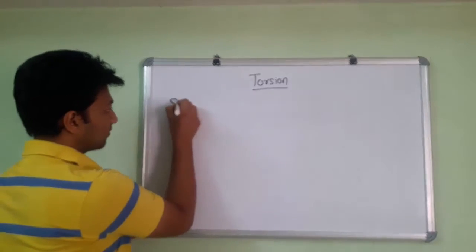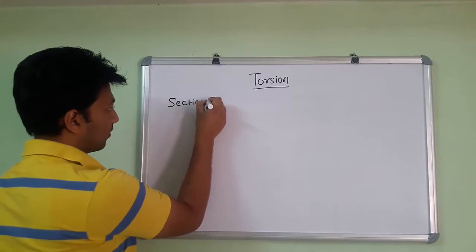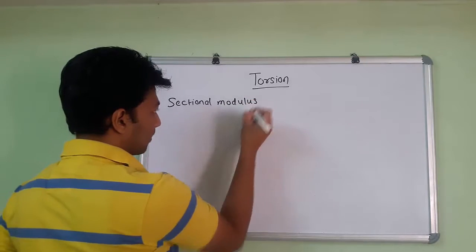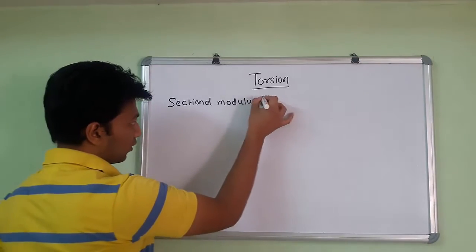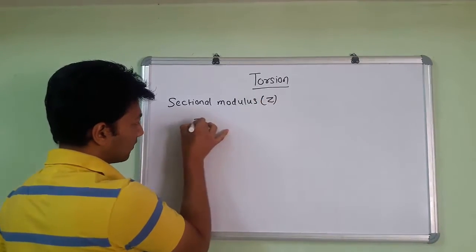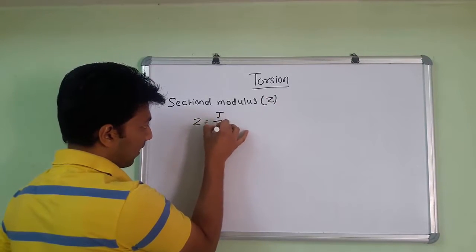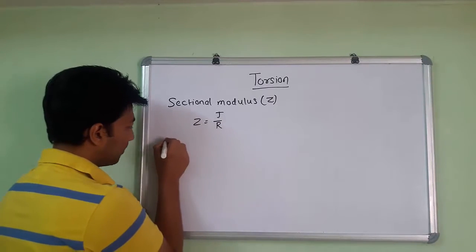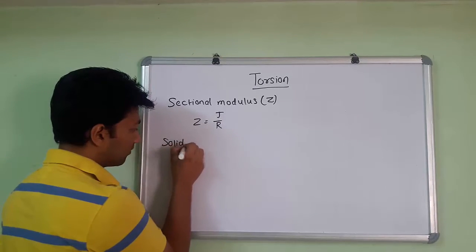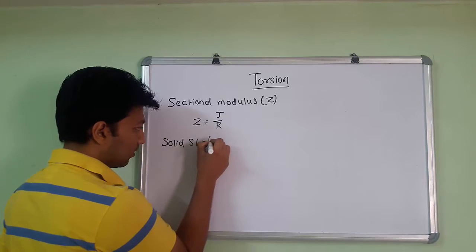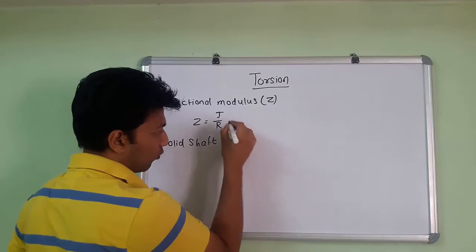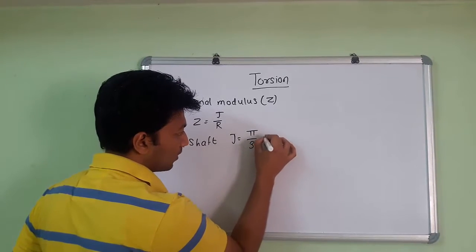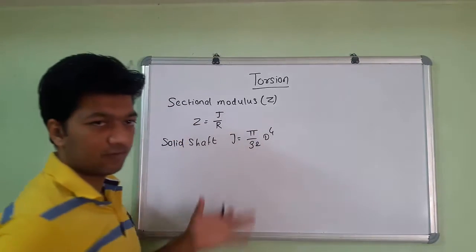The section modulus formula is denoted as Z, Z equals J by R. First we find out for the solid shaft. We know that for solid shaft, J, that is polar moment of inertia, will be pi by 32 d raised to 4, that we found in the first session.